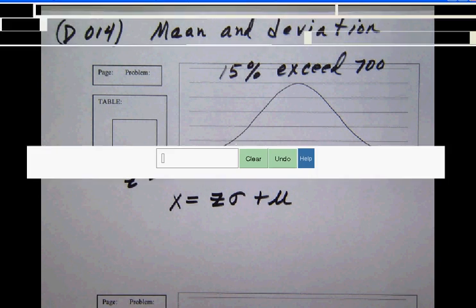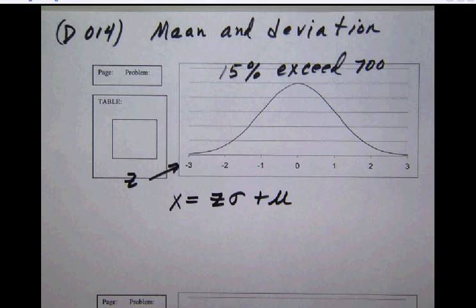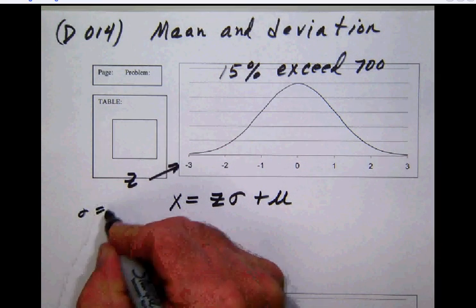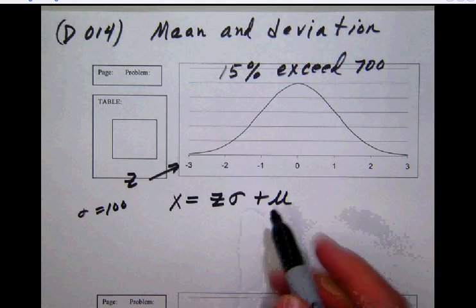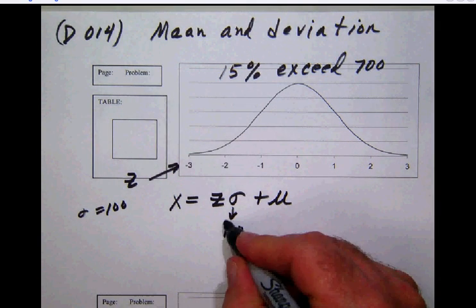Now we can notice here that our standard deviation sigma is given, that that's 100. So let's just simply make a note over here somewhere that sigma is 100. And of course, as we begin to look at our formula here, we can see that we could go ahead and plug that in if we want to. So we can plug that in there.